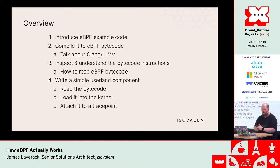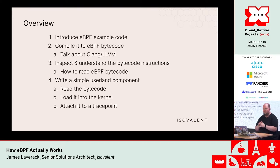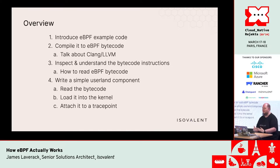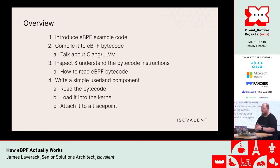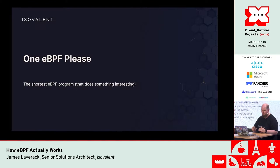Quick overview of what we're going to do: we're going to introduce some sample code, compile it down into eBPF bytecode, talk about the bytecode a little bit, then write a simple userland component that loads it into the kernel and attaches it to a trace point so we can get some debug output. The simplest example you can imagine, and we're going to go through what's happening at each stage.